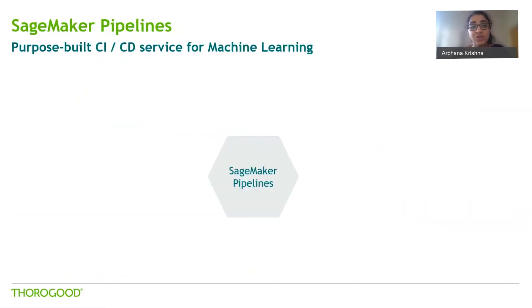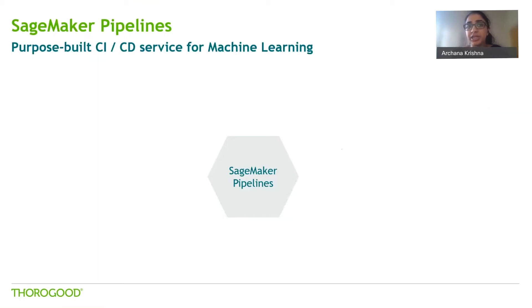I'll now move on to SageMaker Pipelines, one of the newer services released late last year. As the name suggests, it is a purpose-built CI-CD service for machine learning — it allows you to create, automate, and scale pipelines for different stages of the machine learning project, making it a critical tool for enabling MLOps on AWS. Before SageMaker Pipelines was available, you could use AWS Lambda and Step Functions to orchestrate all the different steps, but this new service makes things a lot easier.